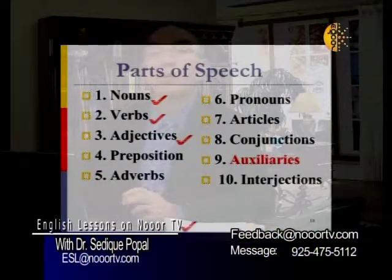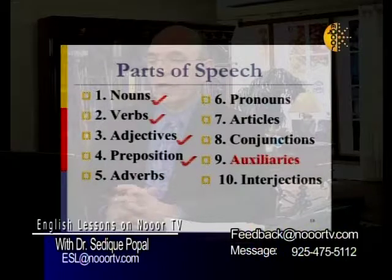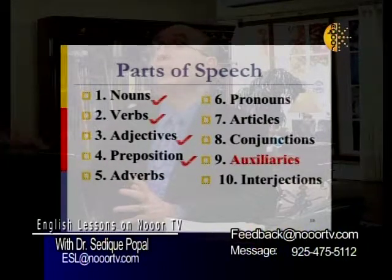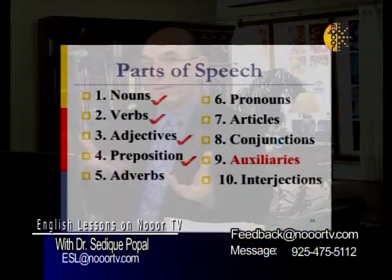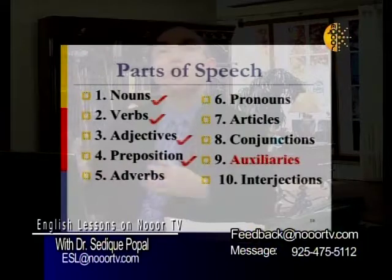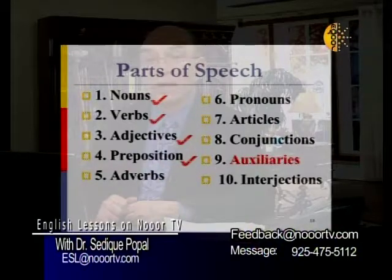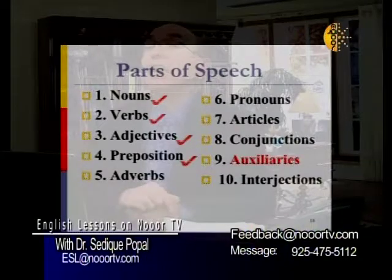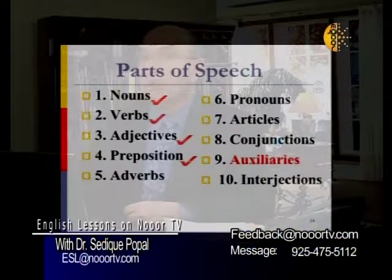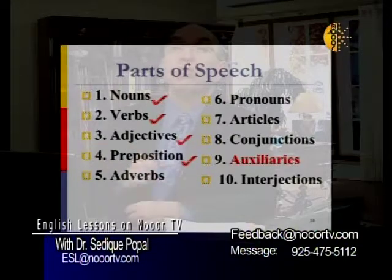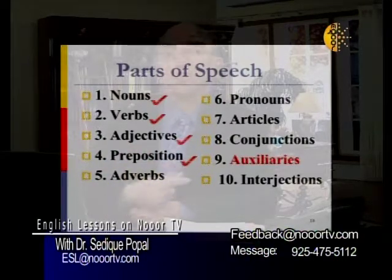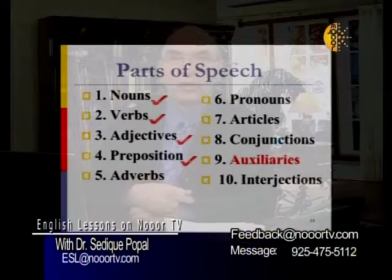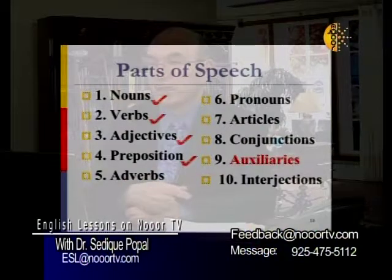Prepositions show the relationship between two nouns. Like, 'the computer is on the table.' Computer and table, and 'on' shows some relationship between the two nouns. Adverbs modify the verb — they basically talk about the verb. The verb is the action. So adverbs tell you how an action takes place, where an action takes place, and when an action takes place.